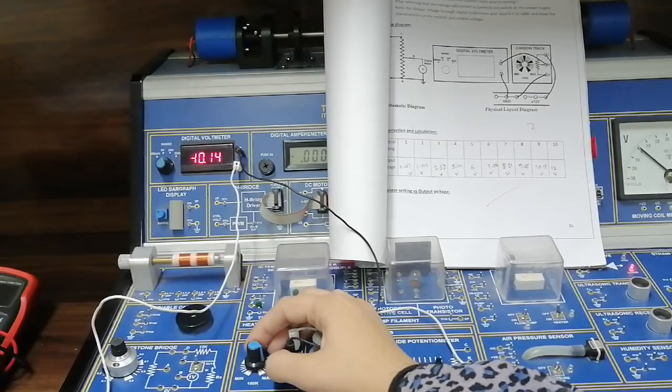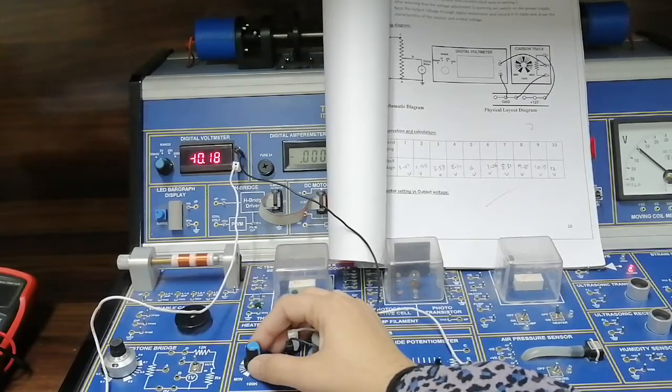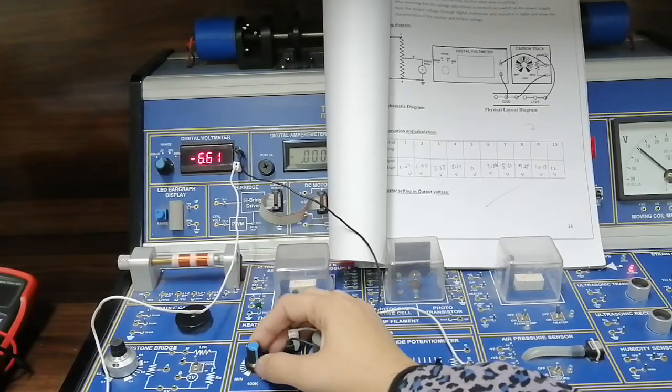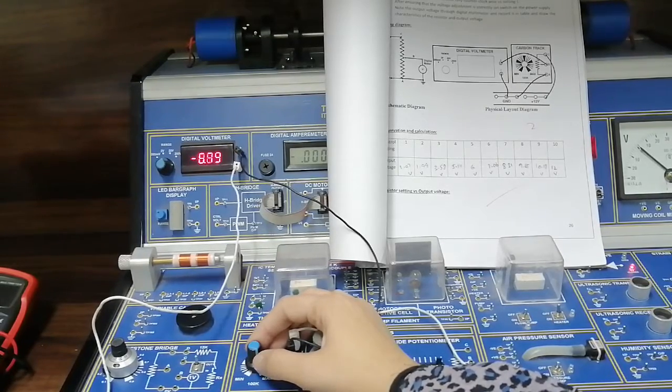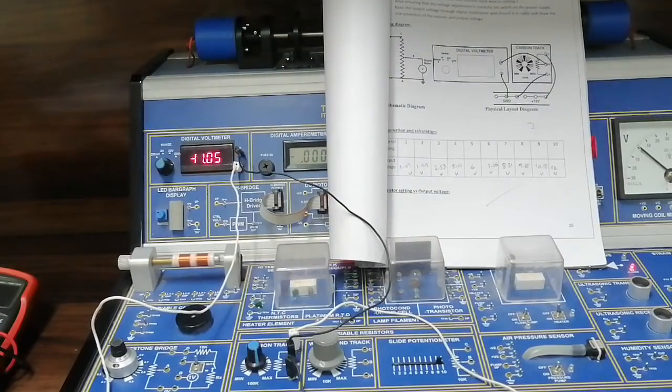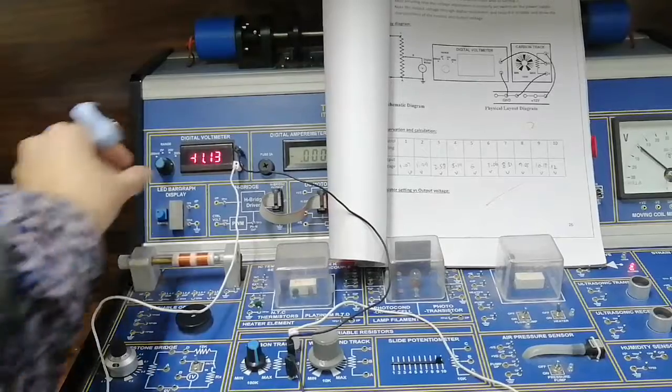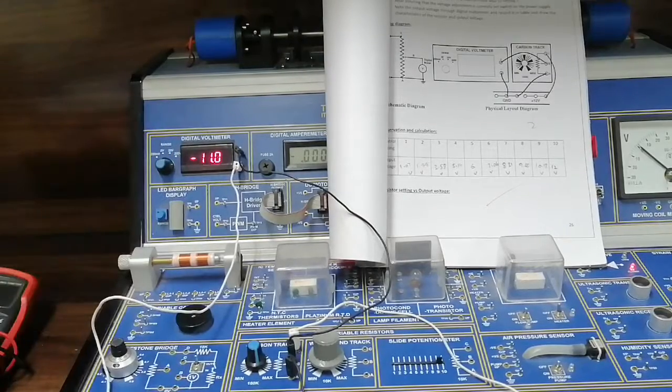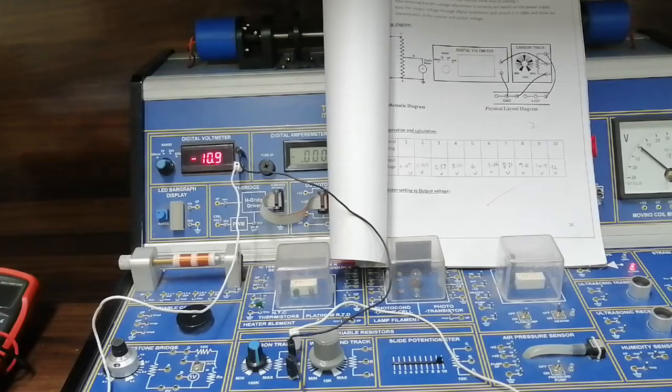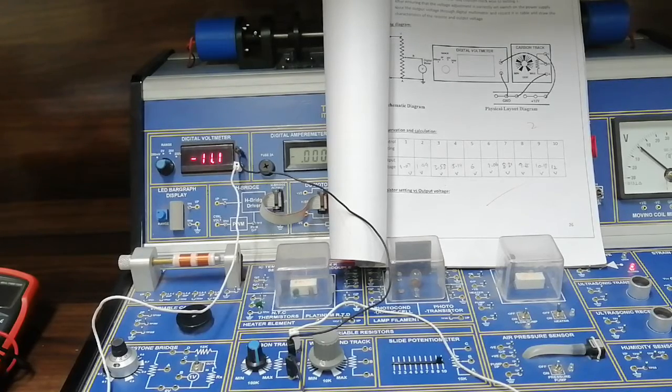Minus 9, minus 10, minus 11, minus 11.4, and yahan pe it's the maximum. That's the maximum voltage available here. If you want to change your scale, go ahead and increase your scale and it's minus 11.9, jo roughly aap ki voltage hai.